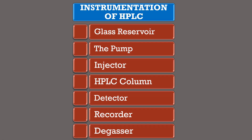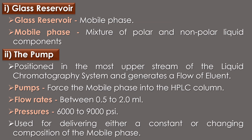Instrumentation of HPLC includes: glass reservoir, pump, injector, HPLC column, detector, recorder, and degasser. The mobile phase is contained in a glass reservoir. The mobile phase or solvent in HPLC is usually a mixture of polar and non-polar liquid components, whose respective concentrations are varied depending on the composition of the samples.